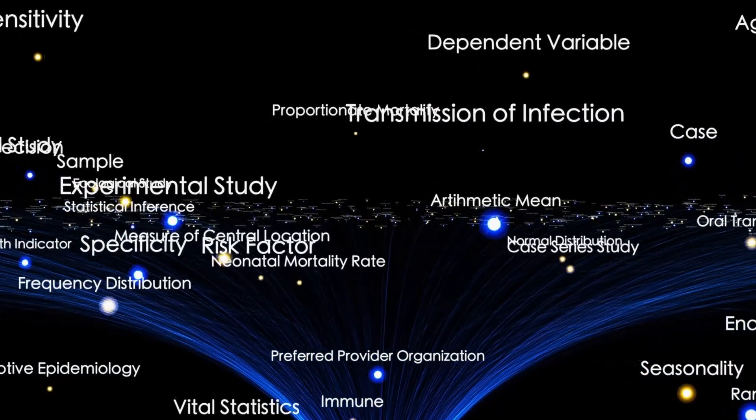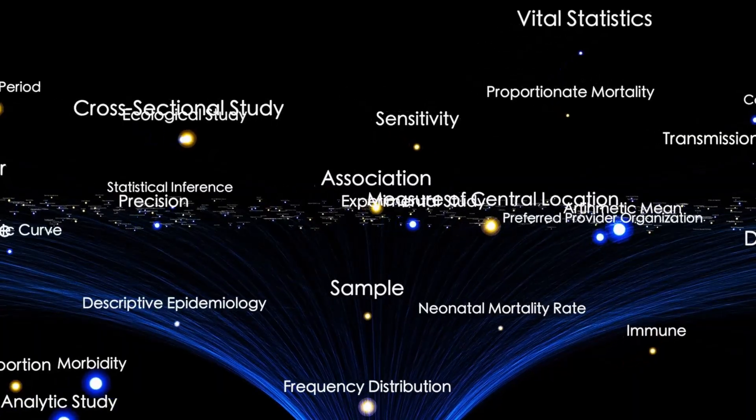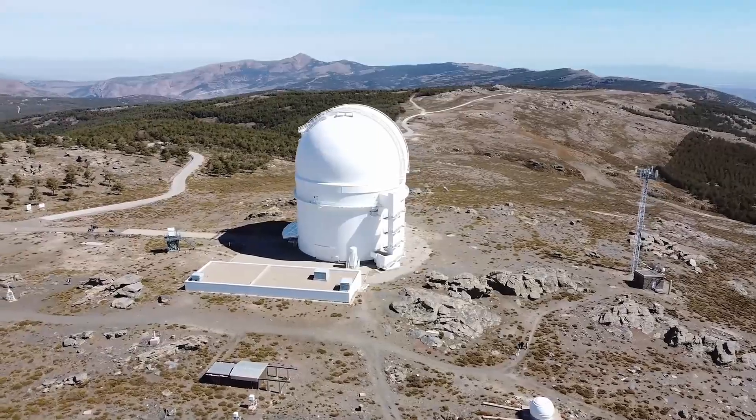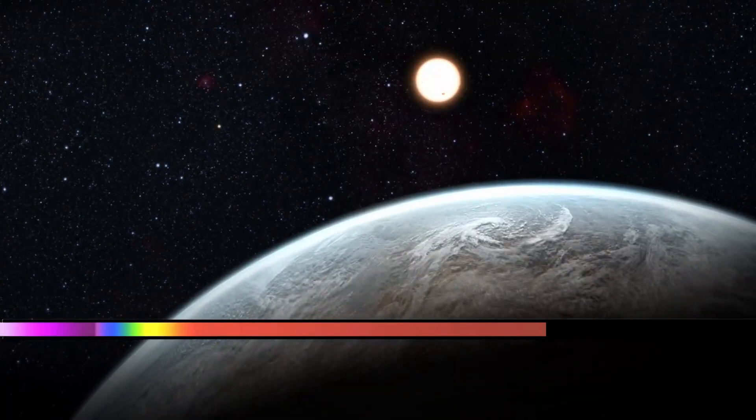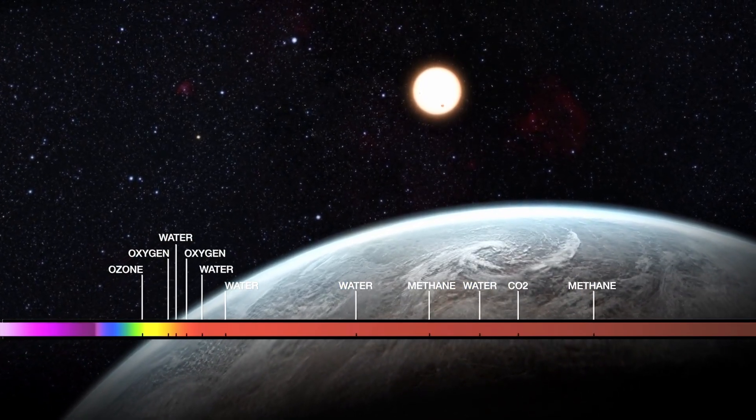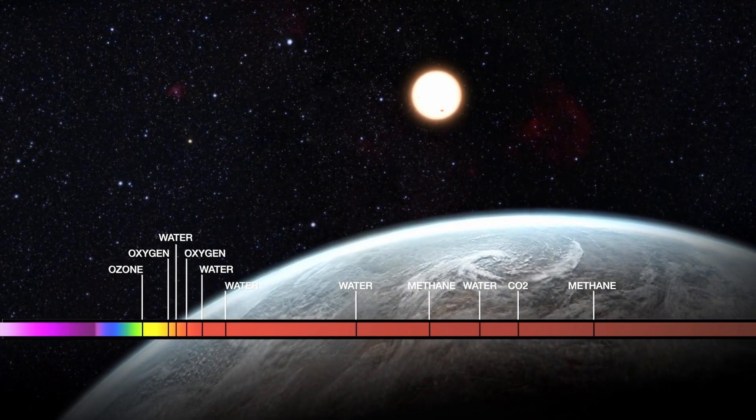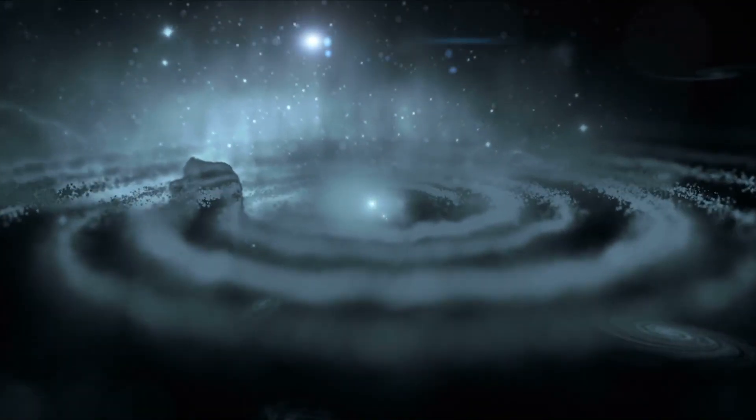Some now believe what we're seeing may not be the object itself, but a shell, a decoy, a mask for something hidden behind frequencies we don't yet understand, something that's been watching us long before we had the tools to watch back. When researchers enhanced the image of three Atlas's coma using Fourier transformation and multi-spectrum filters, they stumbled upon a chilling phenomenon. Hidden within the gas cloud, which should be random, was a repeating fractal pattern, not once, not twice, but across every frame captured over a 17-day period.